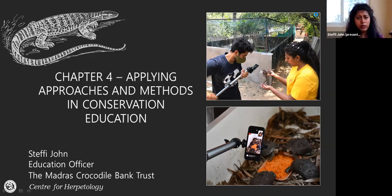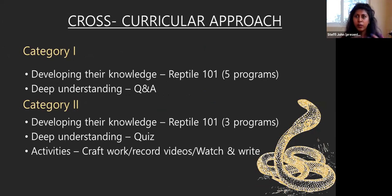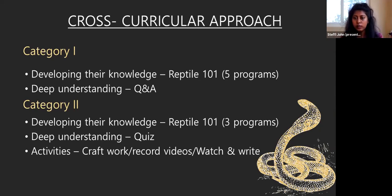The cross-curricular approach from chapter four is about developing knowledge, deep understanding, and activities to keep participants engaged so they won't forget. Usually when people are at the park, you have them see things up close — something they'll always remember. But for virtual programs, it's a different ballgame. I had two categories of students: category one had about 40 to 50 students with one program per week on specific topics — tortoises, frogs, lizards, snakes — with 45 minutes of content followed by 30 minutes of Q&A. Category two had about 10 students and three combined programs with shorter Q&A of 5 to 10 minutes, followed by a quiz.